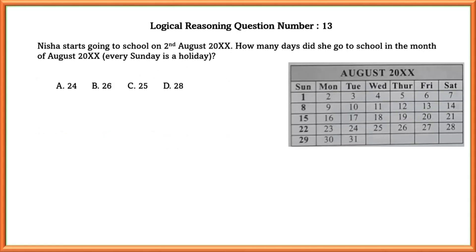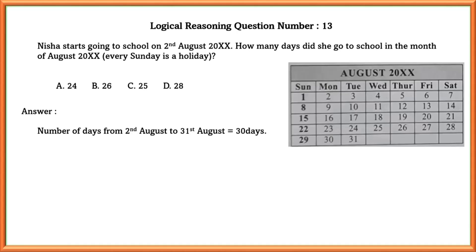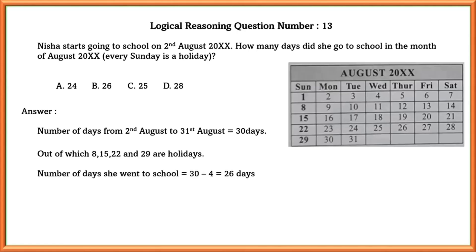Logical reasoning question number thirteen: Nisha starts to go to school on 22nd August. How many days did she go to school in the month of August, if every Sunday is a holiday? She started from 2nd August, which is a Monday. From 2nd to 31st August there are 30 days, out of which 8, 15, 22, and 29 are Sundays — that is 4 holidays. So number of days she went to school is 30 minus 4, which equals 26 days.